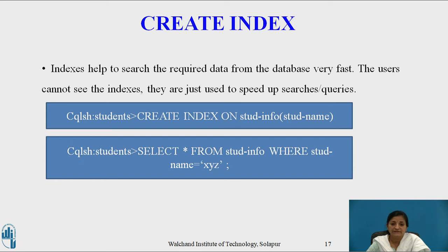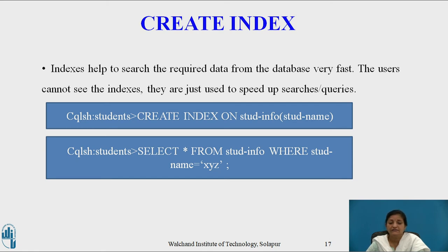Now let's see how to create an index on columns. Indexes help to search required data from the database very fast. Users cannot see these indexes, but they speed up searches and queries. For example, SELECT * FROM student WHERE role_number IN 123 works because role_number is a primary key. But searching on student_name generates an error because student_name is neither a primary key nor has an index been created on it.